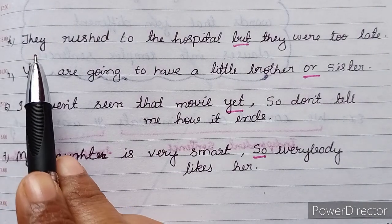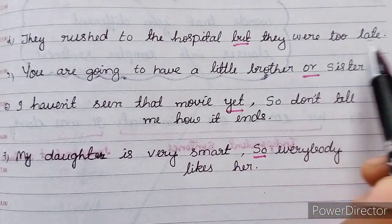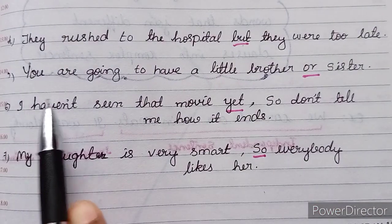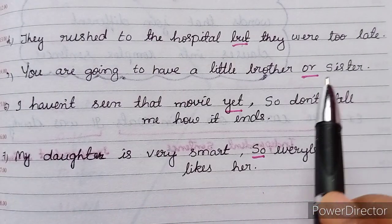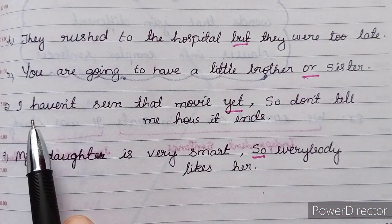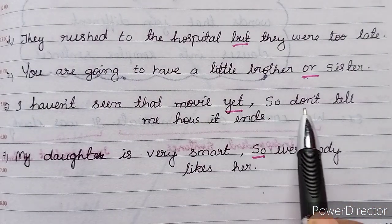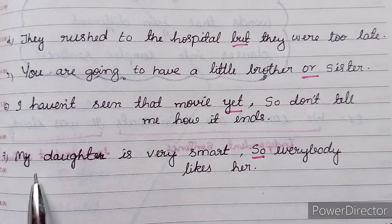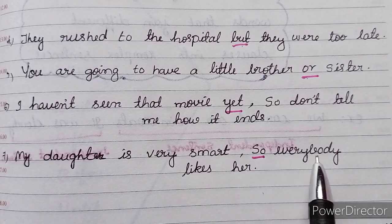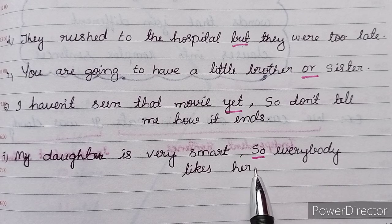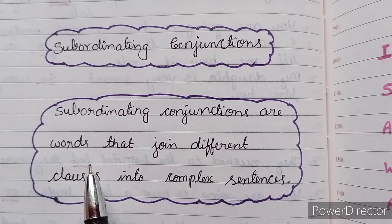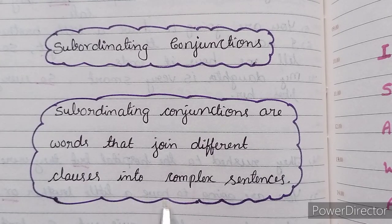'They rushed to the hospital but they were too late' — the conjunction is 'but.' 'You are going to have a little brother or sister' — the conjunction is 'or.' 'I haven't seen that movie yet, so don't tell me how it ends.' And: 'My daughter is very smart, so everybody likes her' — the conjunction is 'so.'